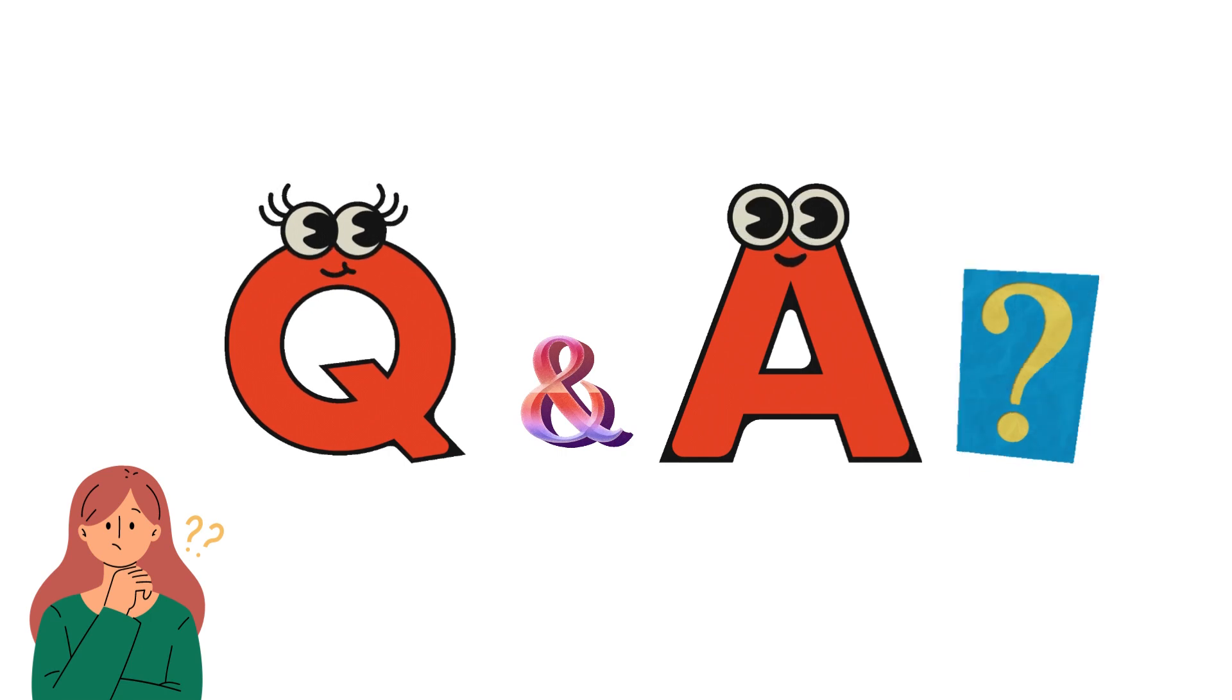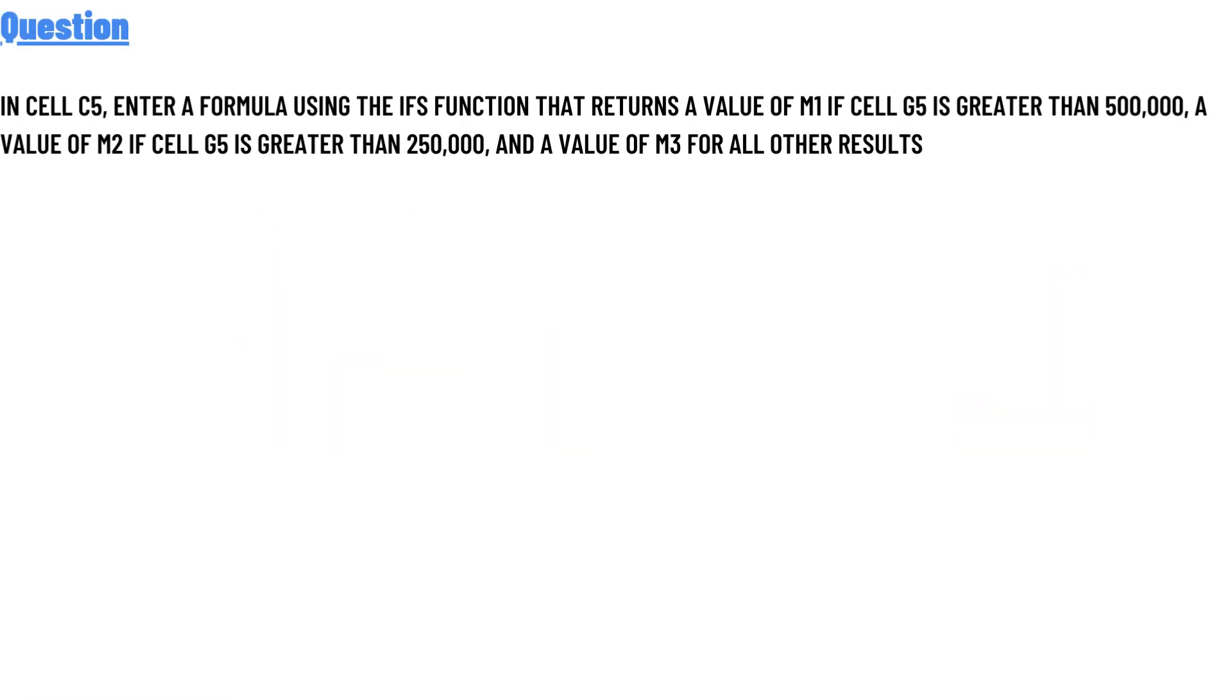Today's question is: In cell C5, enter a formula using the IFS function that returns a value of M1 if cell G5 is greater than 500,000, a value of M2 if cell G5 is greater than 250,000, and a value of M3 for all other results.